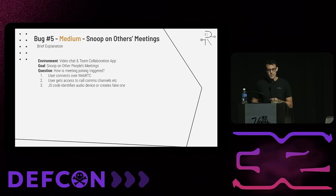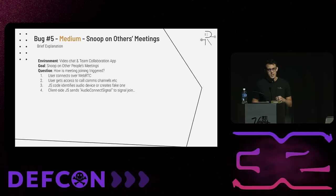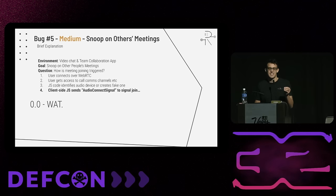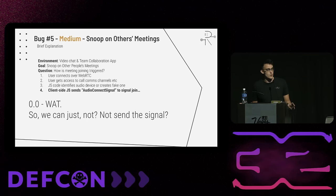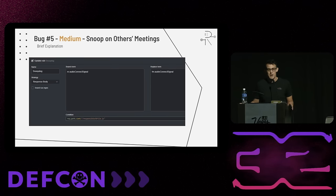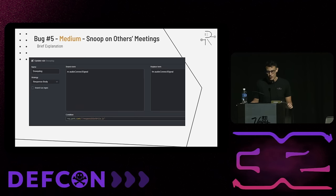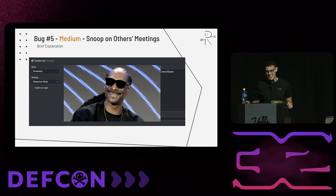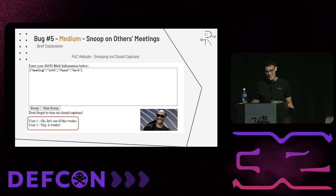How does joining a meeting work? The user connects first over WebRTC, gets all the information like call comms channels, then the JS code identifies an audio device or creates a fake one. Then the client-side JS sends the audio connect signal to join. That little sound you hear when you join a meeting was actually triggering the participant list update — which I really could not believe. Since this was happening on the client side, we could just not send the signal. We did that with a match-and-replace rule: a true/false switch on whether the audio signal had been sent. We became Snoop Dogg in that environment.